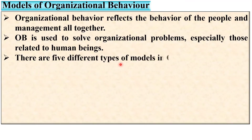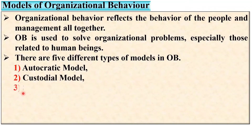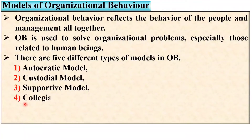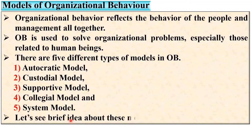There are basically five different types of models in organizational behavior: first, the autocratic model; second, the custodial model; third, the supportive model; fourth, the collegial model; and last, the system model. Let us see a brief idea about these five different models one by one.